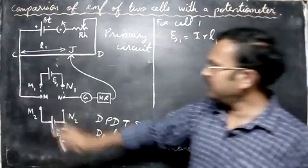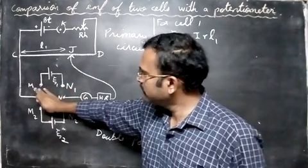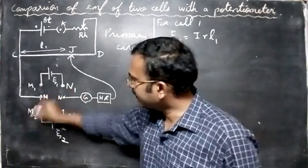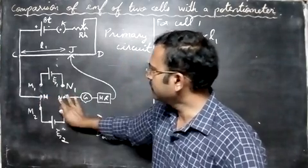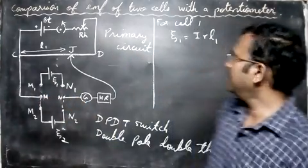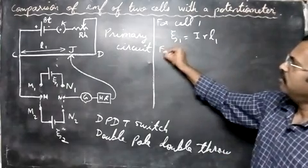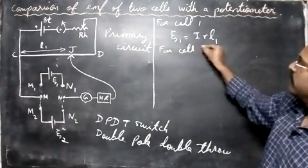Next what you do after you note down the balancing length for the first one, you disconnect the first cell on top and connect the second cell down like this way. This is the second cell.